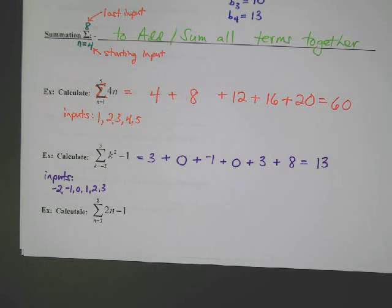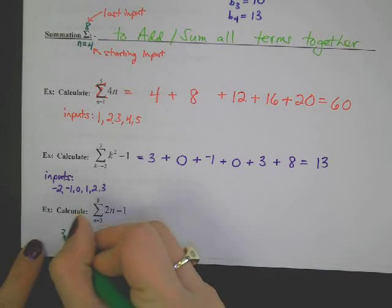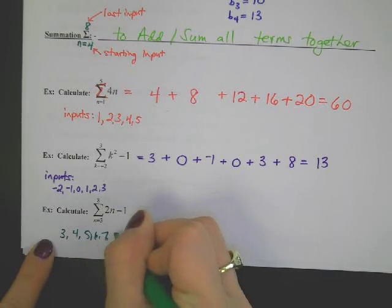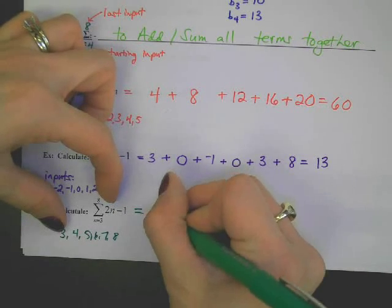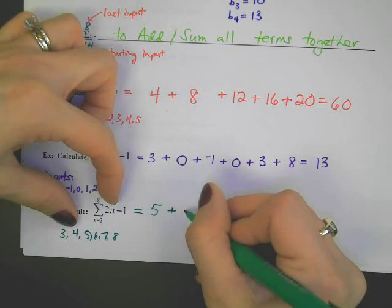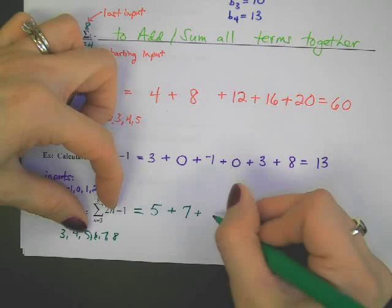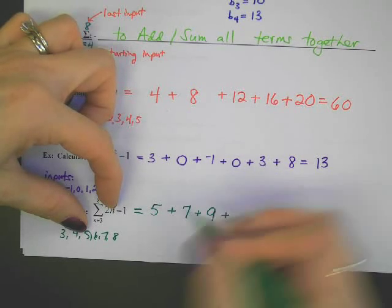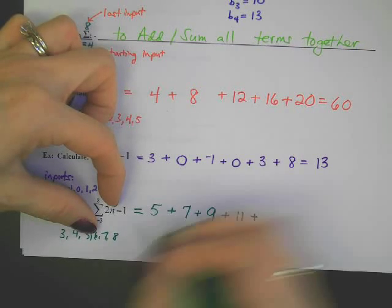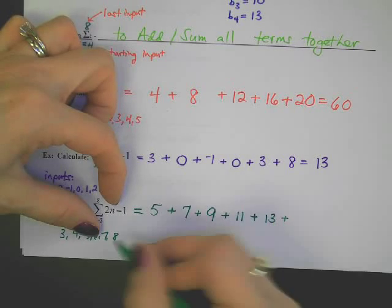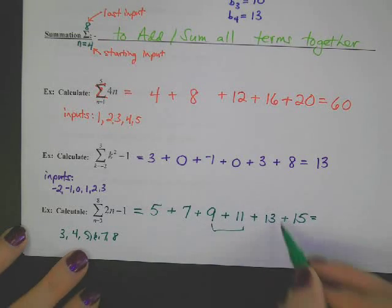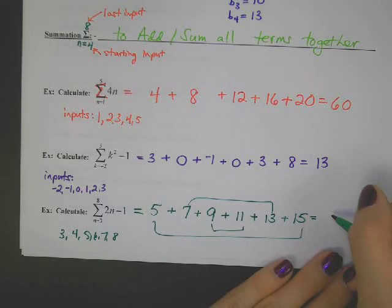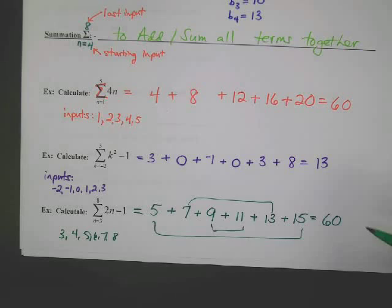Let's do one more. We have to make sure we put in the right inputs — they go from 3 up to 8: 3, 4, 5, 6, 7, 8. Plug in 3: 5. Plug in 4: 7. Plug in 5: 9. Plug in 6: 11. Plug in 7: 13. Plug in 8: 15. Try to add this up without your calculator, adding things a smart way. Survey says 60 again — look at that, 60.